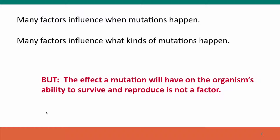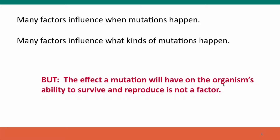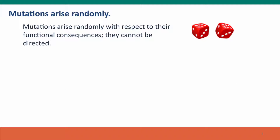Many factors influence when mutations happen and what kinds of mutations happen. But one thing that does not influence when or what kind of mutations happen is the effect that the mutation will have on the organism's ability to survive and reproduce. The effect on the organism's fitness is not a factor in determining what kinds of mutations happen. Mutations happen by chance, and then natural selection selects from among those mutations. Mutations arise randomly with respect to their functional consequences.